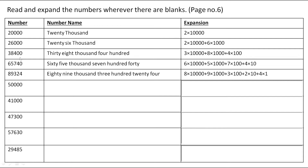The next number is 38,400. The name of this number is thirty-eight thousand four hundred. The expansion is 3 × 10,000 + 8 × 1,000 + 4 × 100, because 4 is on the 100's place.